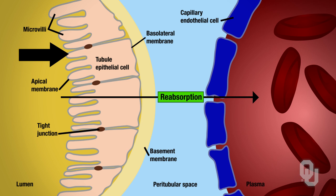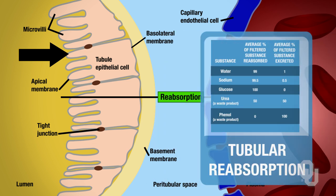This is going to involve what's called transepithelial transport — we're transporting stuff across the epithelial cells. What we're going to reabsorb is listed here: 99% of water, all of your sugar, and almost all of your salts. For more details, you can look at the table on the right.